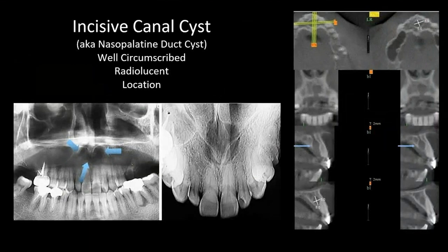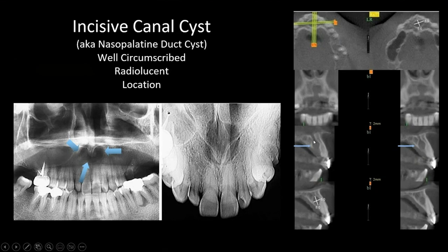Moving on to nasopalatine duct cysts — also called incisive canal cysts. These arise from an embryonic remnant of the notochord that proliferates into a cystic process. In 2D, you sometimes see a heart-shaped appearance. On CBCT it's easy to identify because it's located within the incisive canal, looking like a water balloon or grape within that canal — a nice hydrostatic appearance with intact cortical borders.